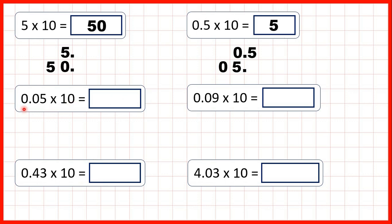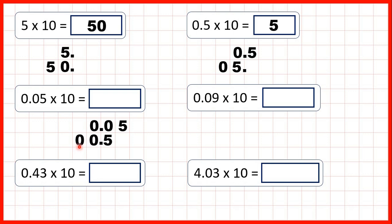Now we have 0.05 times 10. We write the number out and copy down the decimal point. To multiply by 10, the digits move 1 square to the left. Copying the digits down 1 square to the left, we now have 0, 0.5. We can't have an empty ones column, but we don't need the leading 0 telling us we have no tens, so we can just write our answer as 0.5.